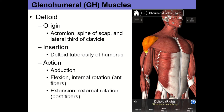Deltoid is involved in pretty much everything at the glenohumeral joint. The anterior deltoid handles glenohumeral flexion; the middle or lateral portion handles abduction; the posterior portion handles extension. The anterior fibers also handle internal rotation, and the posterior fibers handle external rotation. The only motion deltoid is not involved in is adduction.